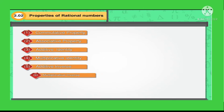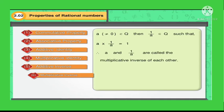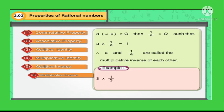Next is the multiplicative inverse. If A is not equal to 0, but any rational number, then 1 upon A is any rational number such that A into 1 upon A is equal to 1. A and 1 upon A are called the multiplicative inverse of each other. For example, 3 into 1 upon 3 is equal to 1, so 1 upon 3 is the multiplicative inverse of 3.